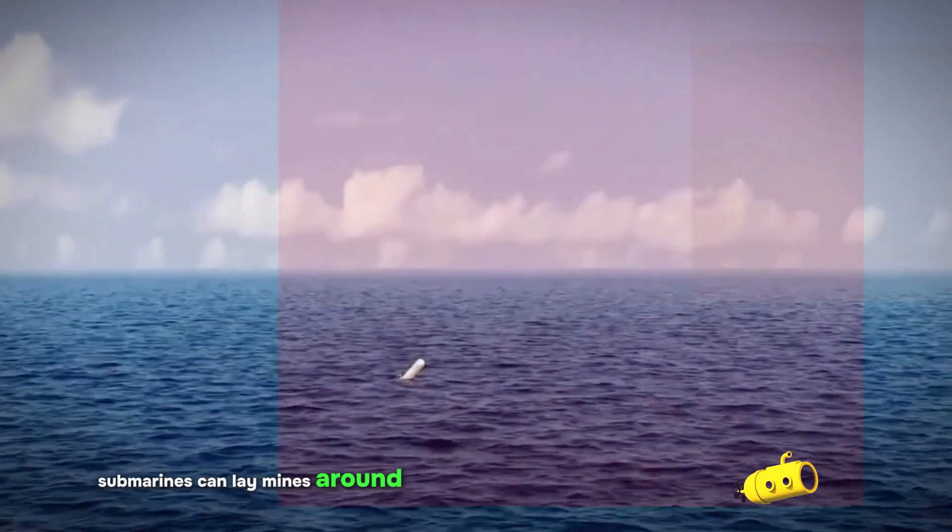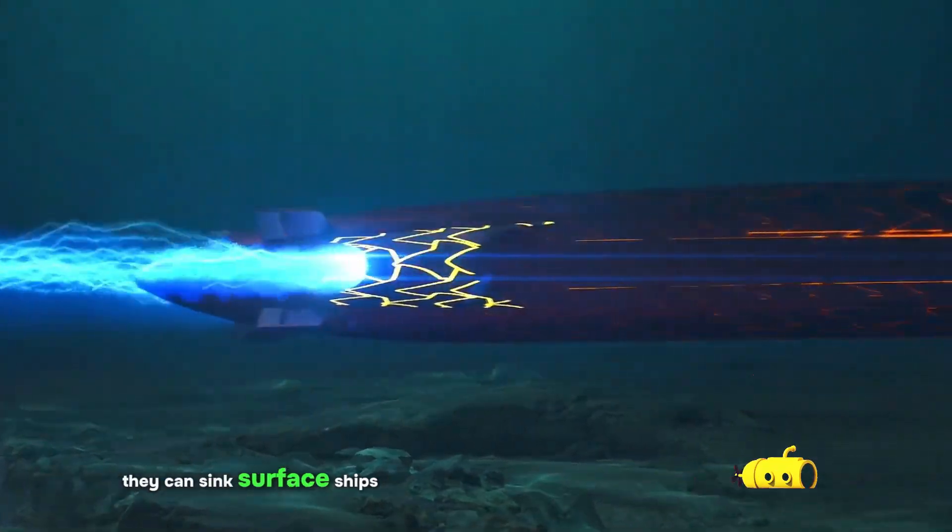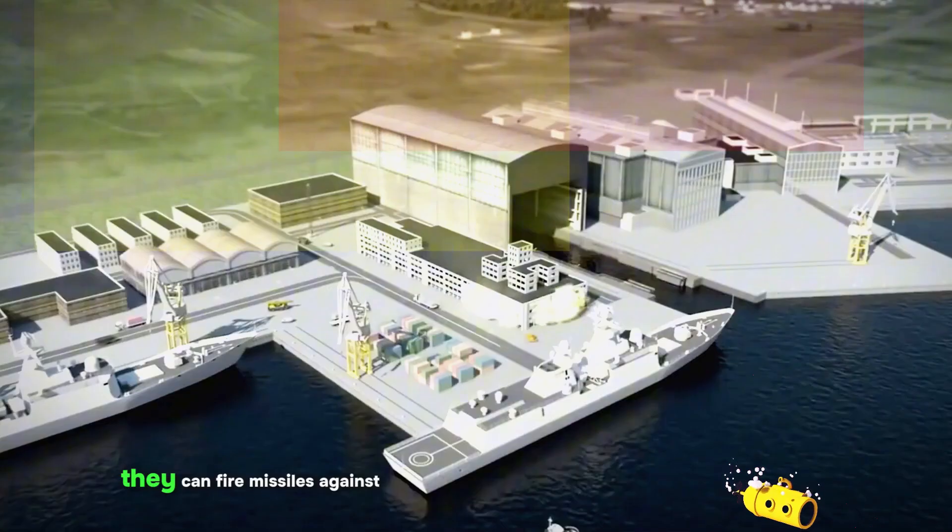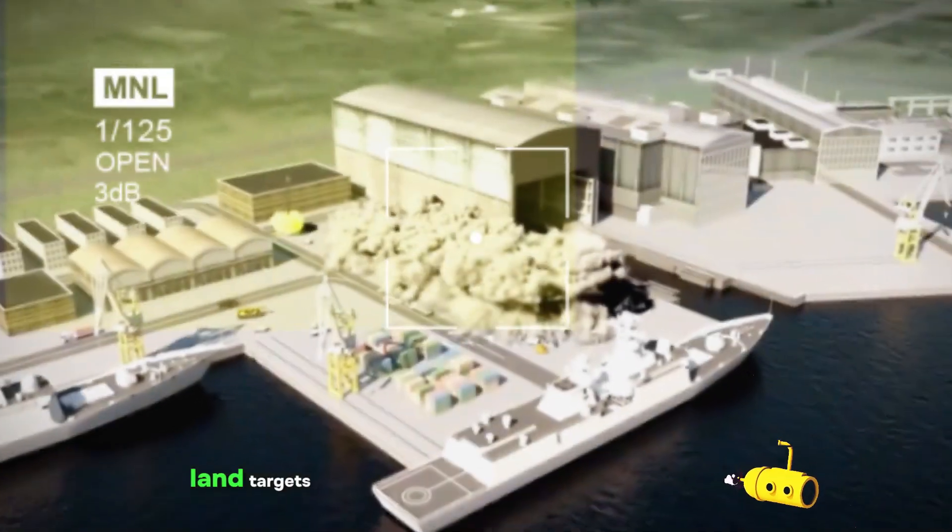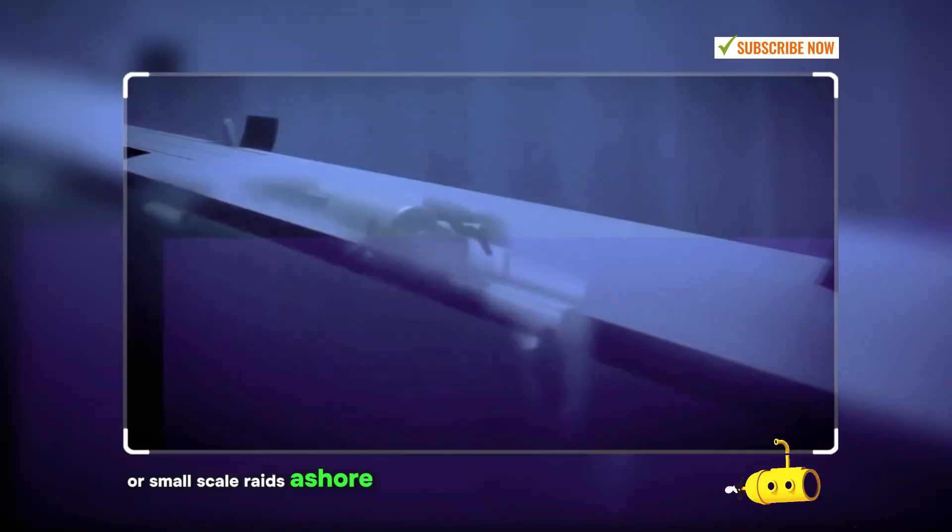Submarines can lay mines around enemy ports and in shipping channels. They can sink surface ships with torpedoes or anti-ship missiles. They can fire missiles against land targets, and they can insert and recover special forces for reconnaissance missions or small-scale raids ashore.